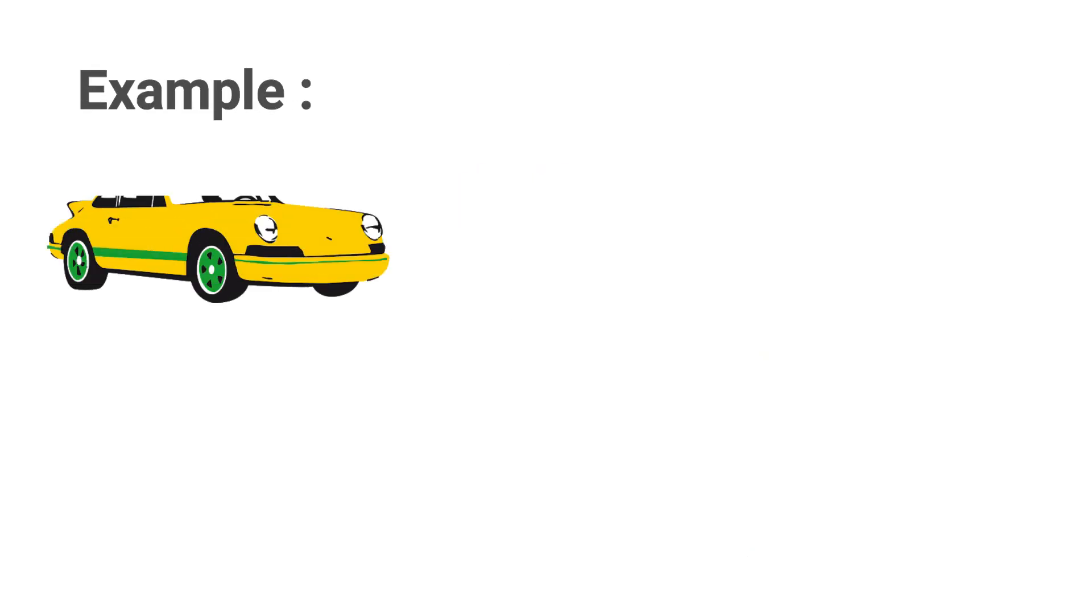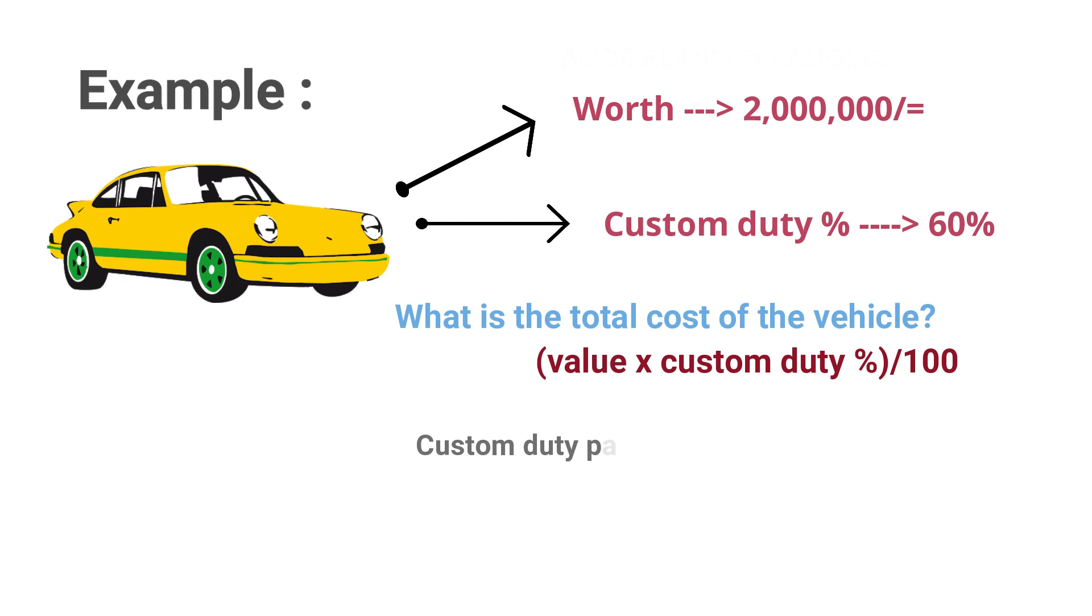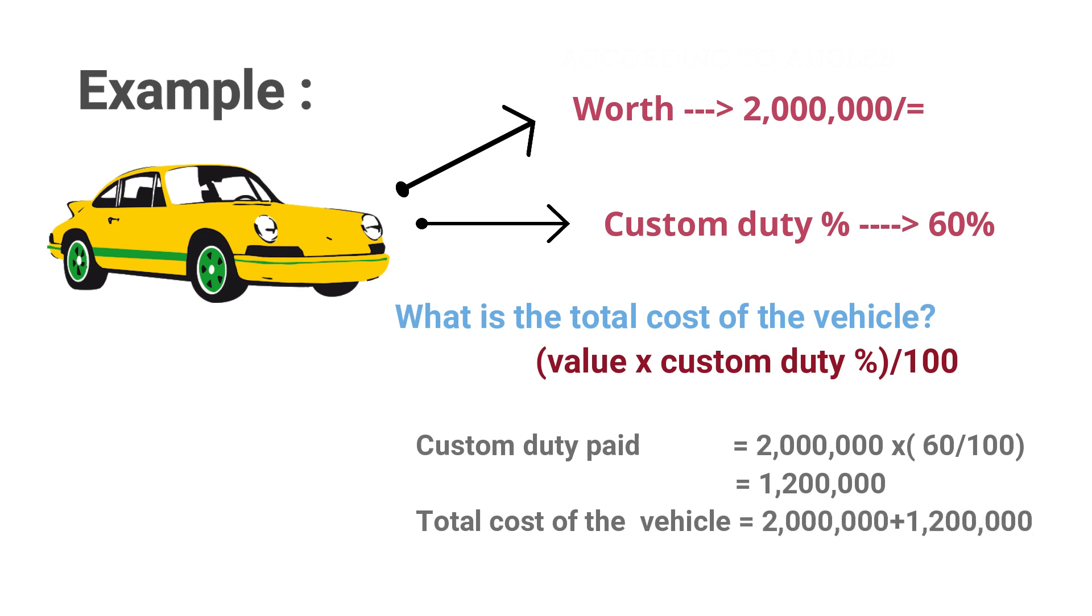Let's turn to some examples. A car worth 2 million rupees is imported. 60 percent of its value is to be paid to the customs. What is the total cost of the vehicle? First calculate the custom duty paid, that is 2 million into 60 over 100. It gives us 1 million 200,000. Value of the car plus the custom duty is the cost. It sums up to 3 million 200,000.